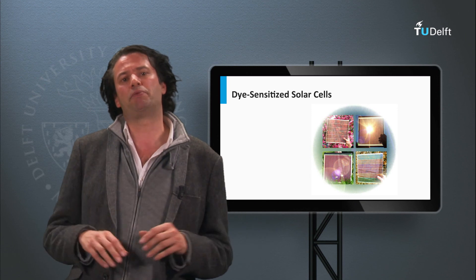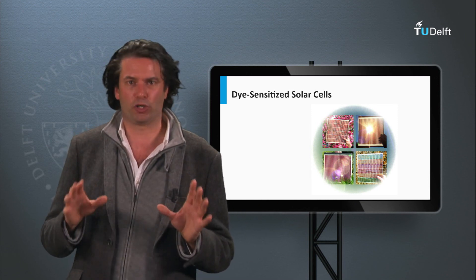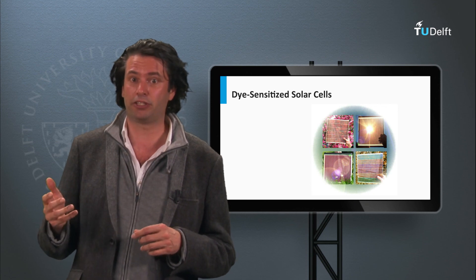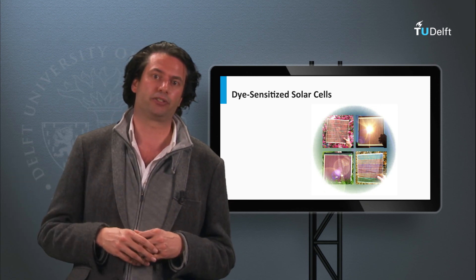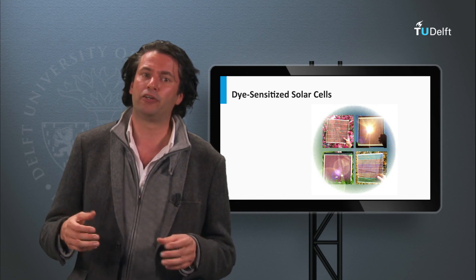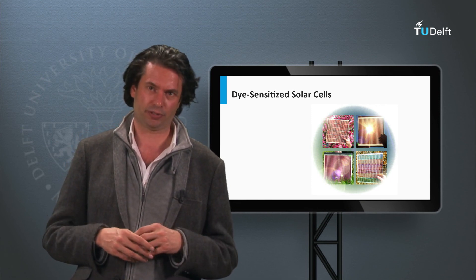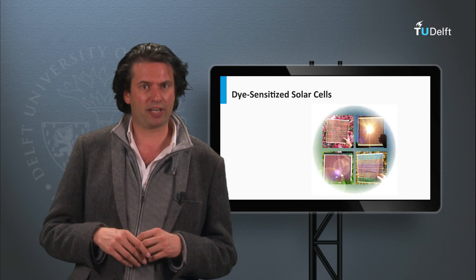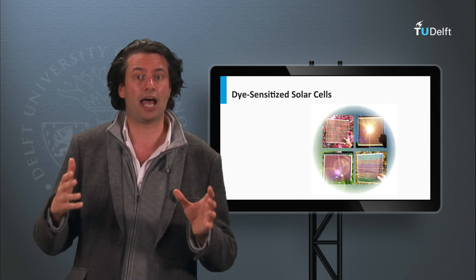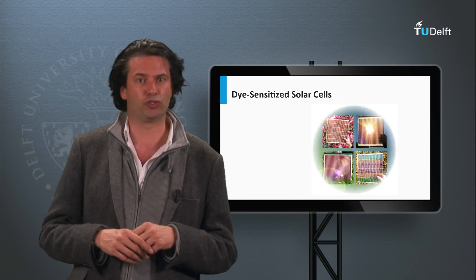The dye-sensitized PV technology is facing some more challenges. One is replacing the expensive platinum electrode material with other cheaper materials. The second one is the development of more stable and resistive electrolyte materials. The third one is the development of improved dyes, improving the spectral and band gap utilization of the solar cells.